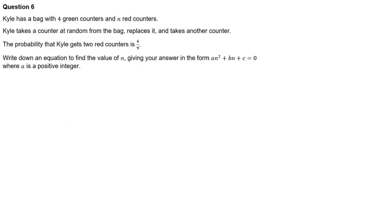Here we've got a bag with four green counters and n red counters, so the total number of counters is four plus n. So we've got one taken at random, it's replaced, and then take another one. So the events are independent. The first one doesn't affect the second one because they're replaced. And we're told the probability of getting two red counters is four-ninths.